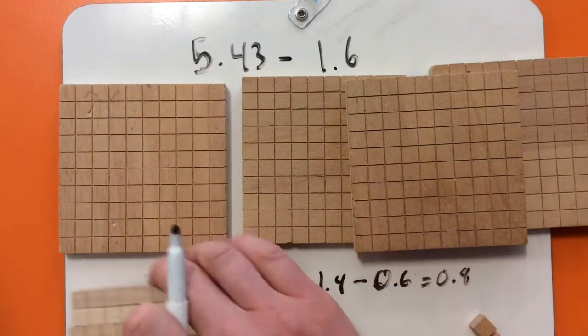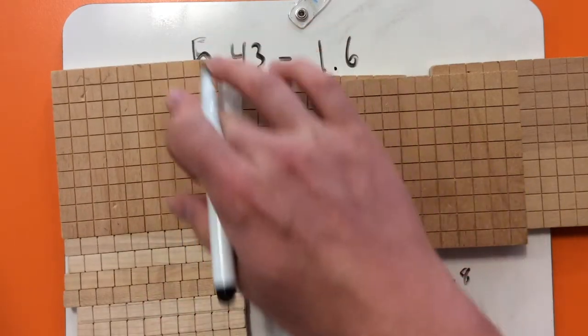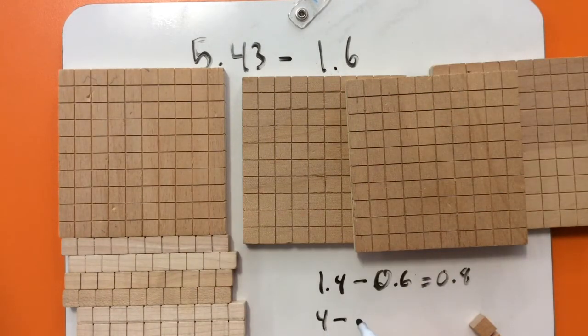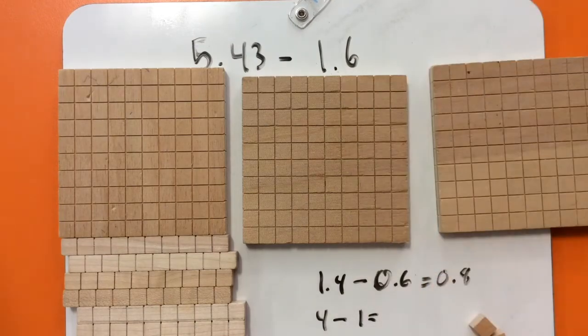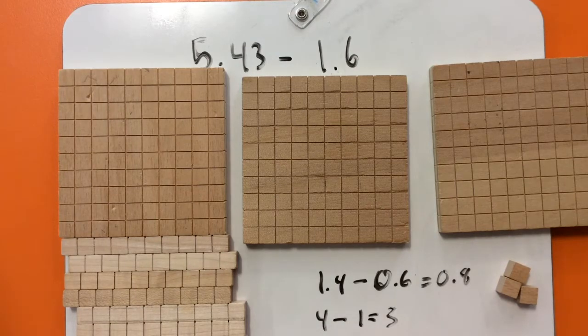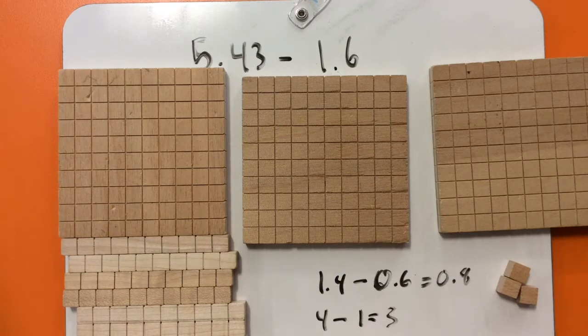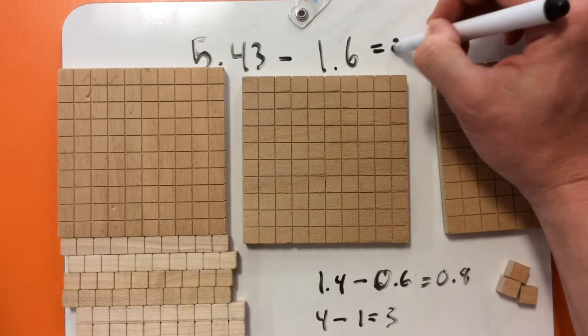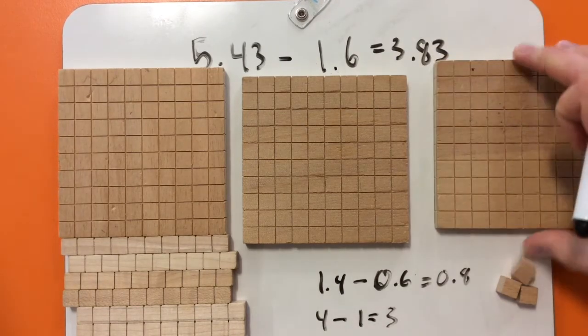So I'll move those right there. I've got 5 ones, but I have now 4, because I exchanged 1. So 4, take away 1, equals 3. Plus I've got my 0.03. So I've got 3, plus 0.8, plus 0.03, equals 3.83.